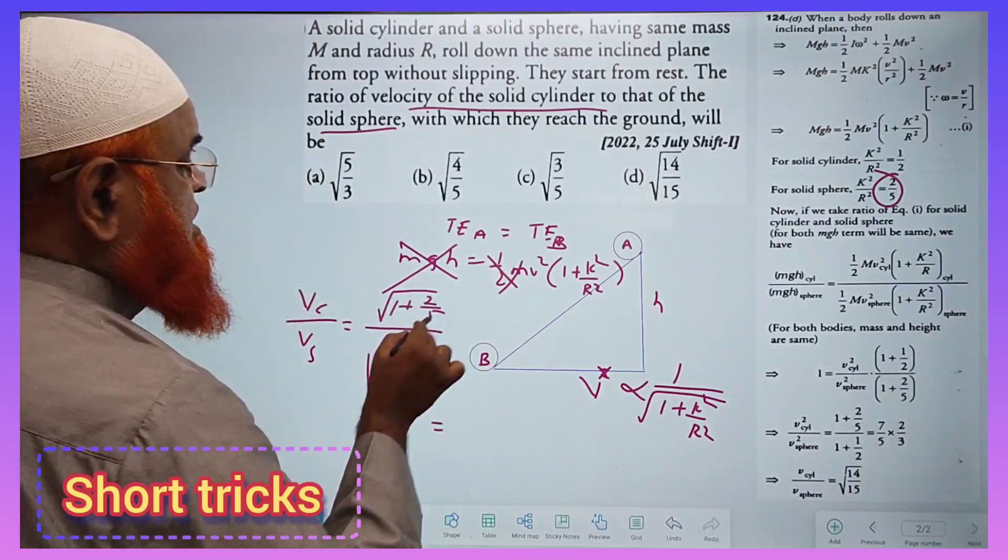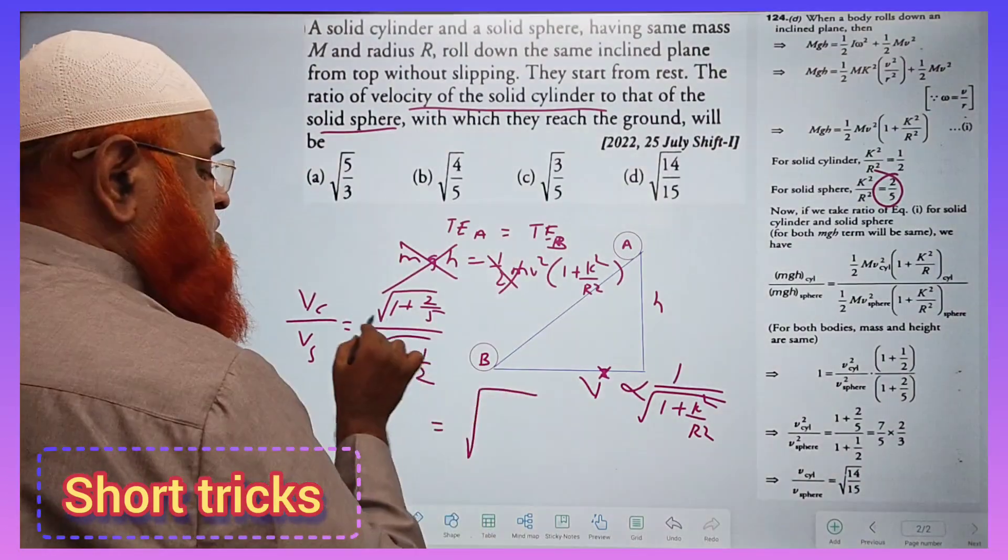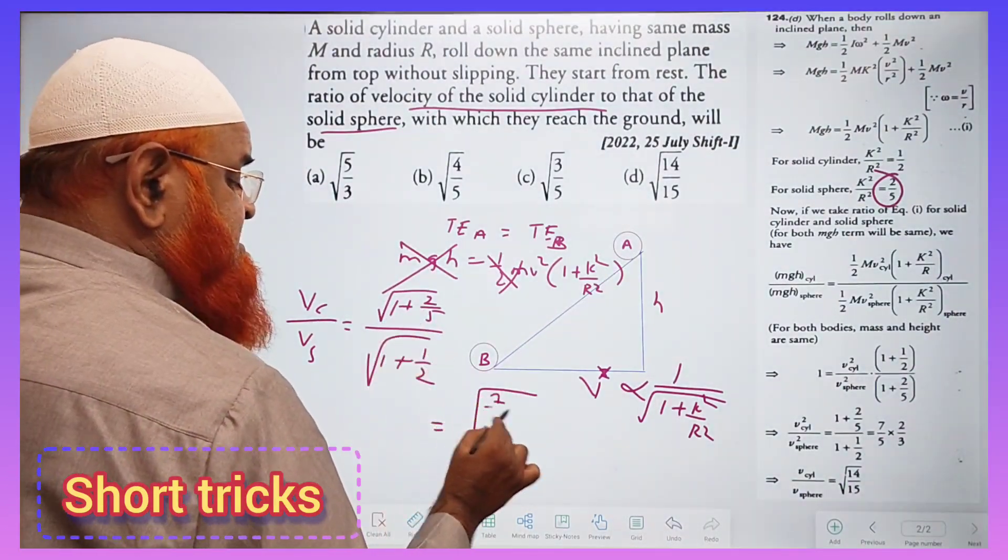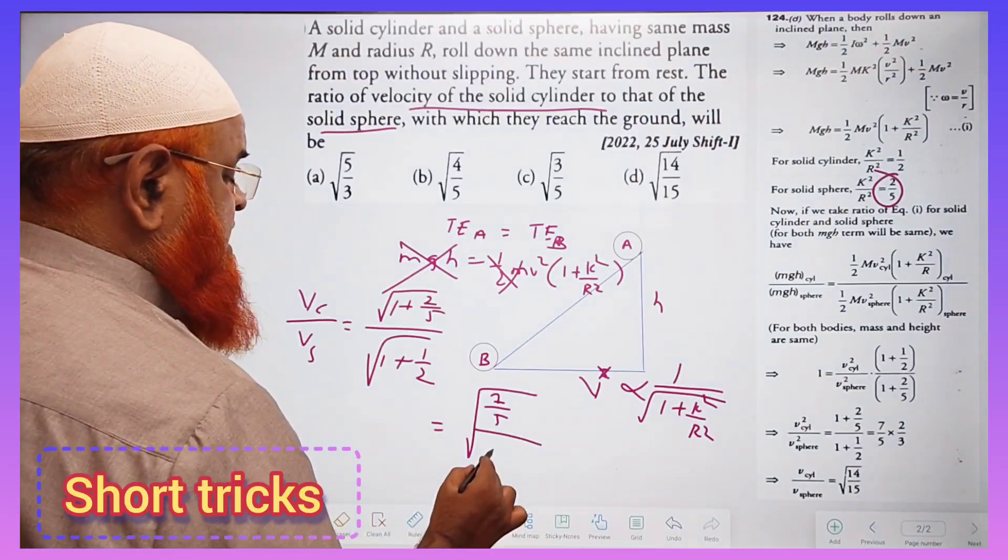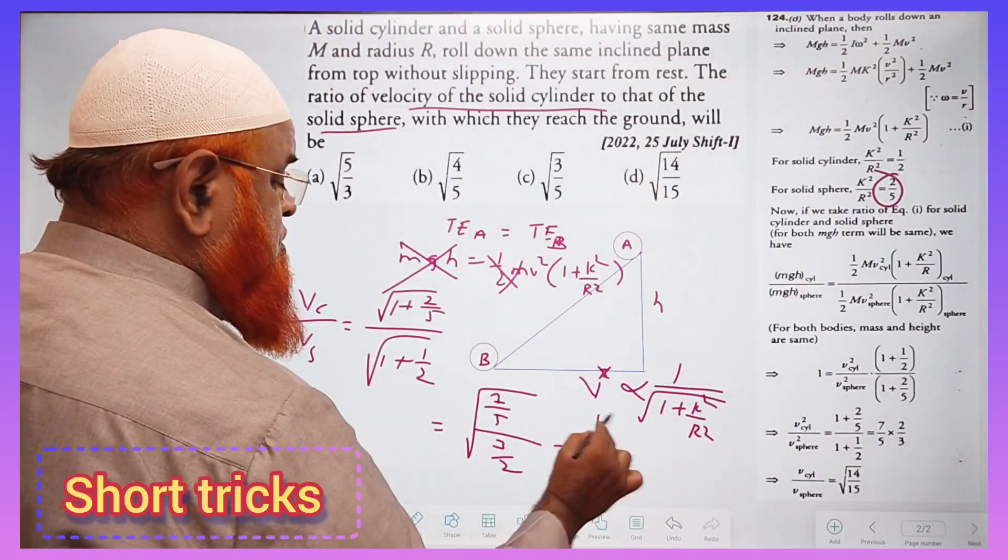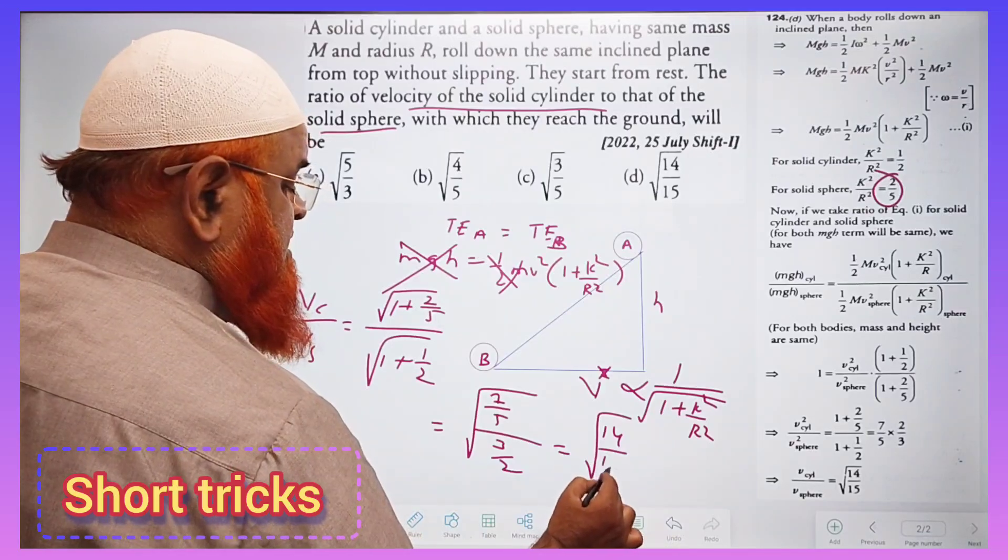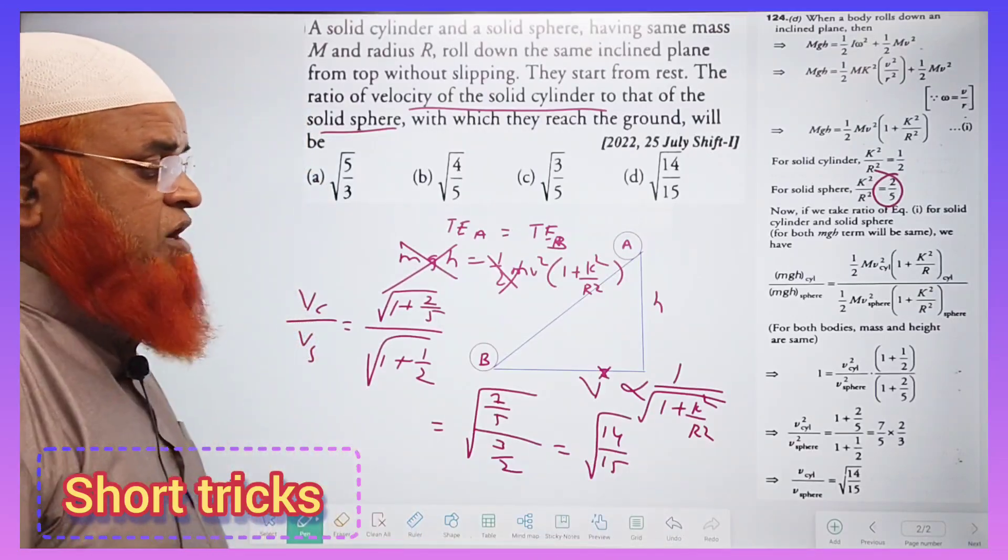So from this it is understood that you'll be getting now square root of 7/5 whole divided by 3/2. So therefore it is going to be √(14/15).